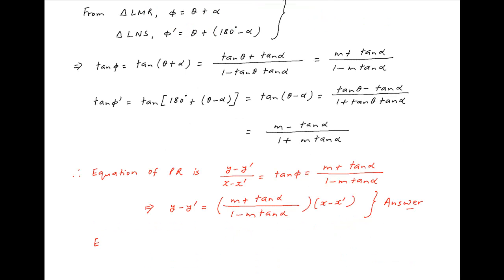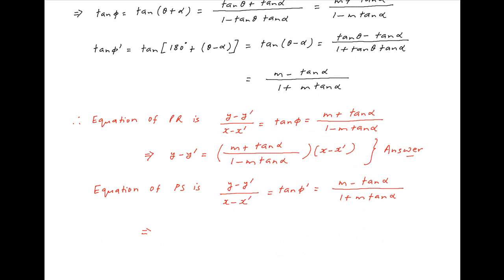Similarly, the equation of PS uses tan phi-dash, which is equal to m minus tan alpha upon 1 plus m times tan alpha, as determined above. This can be written as y minus y-dash is equal to m minus tan alpha upon 1 plus m times tan alpha, multiplied by x minus x-dash.